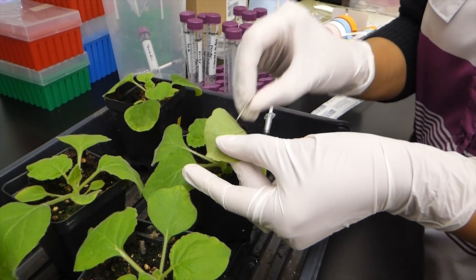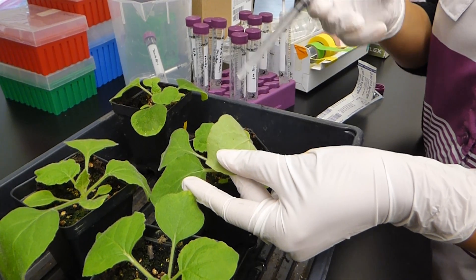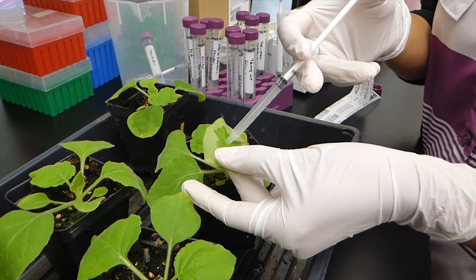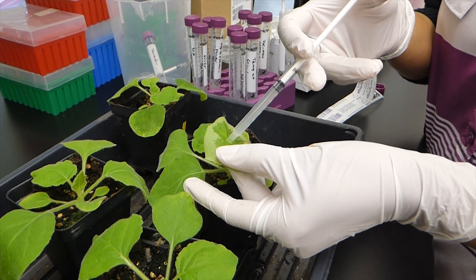Then, prick the underside of a leaf with a pin and inject the solution. You can use multiple leaves per plant to make sure you have enough samples.